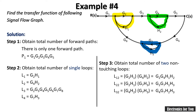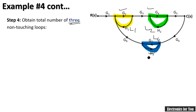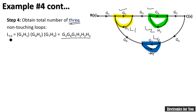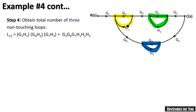Step number 4 is to find three non-touching loop pairs. L1, L2, and L4 are all non-touching to each other, so L13 = L1 × L2 × L4, giving the overall gain as their product. For step 5, there are no four non-touching loops because loop L3 is touching to every other loop.